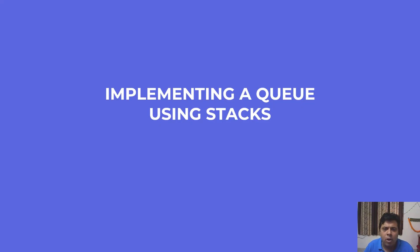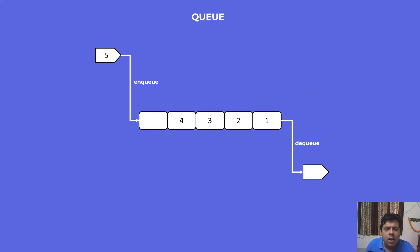Let's get on with implementing a queue using stacks. But before we get into the actual implementation details, let's refresh our concepts about queues and stacks. A queue data structure is what is known as an ADT, or abstract data type. It has two important methods: first is the enqueue method, which is used to put elements into the queue, and then we have the dequeue method, which is used to extract elements from the queue.